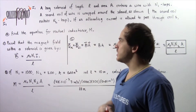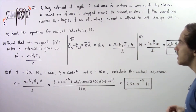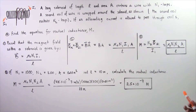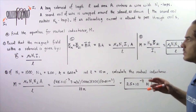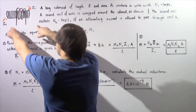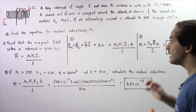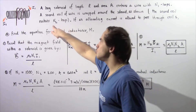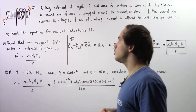Let's suppose we have the following example. A long solenoid of length L and area A contains a wire with N1 number of loops. A second coil of wire is wrapped around the solenoid as shown in the following diagram. The second coil of wire contains N2 number of loops.